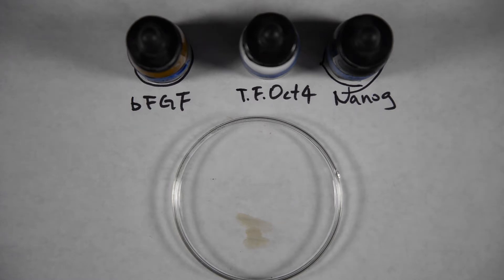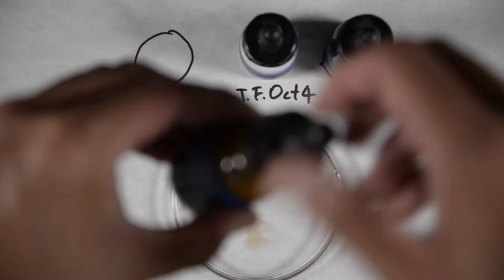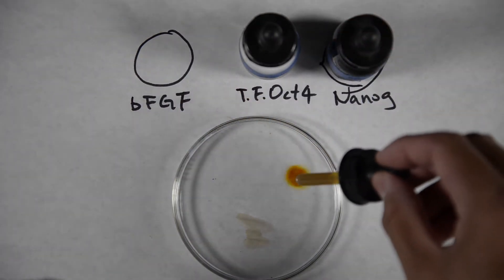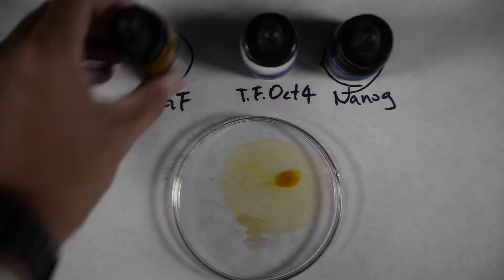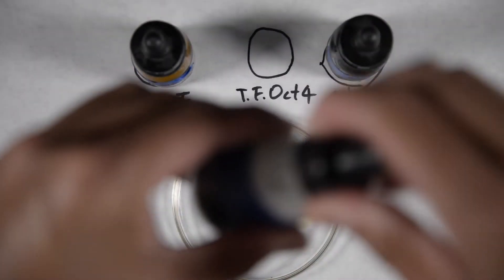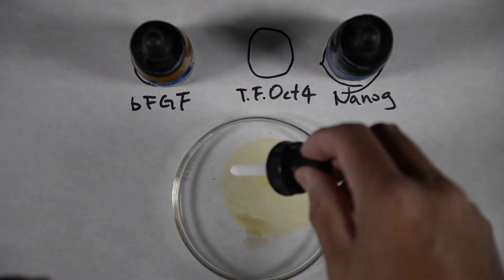scientists will already have a medium prepared for the embryonic stem cells to successfully and continuously differentiate after they're removed from their embryo cells. The whole culture will be composed of a protein matrix added with some BFGF to ensure the constant differentiation of the embryonic stem cells, along with two kinds of proteins — one called TFOCT4 and the other called NANOC — both of which will ensure the survival and successful differentiation of the embryonic stem cells.